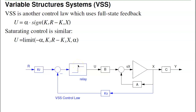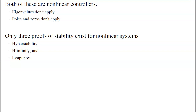This lecture looks at how to design a variable structure system — basically the same as full state feedback with a slight variation. A problem with this type of control is it's nonlinear. With nonlinear feedback systems, you have a problem trying to prove stability. With nonlinear systems, eigenvalues don't apply, poles and zeros don't apply, and it's fairly hard to prove whether or not the system is stable.